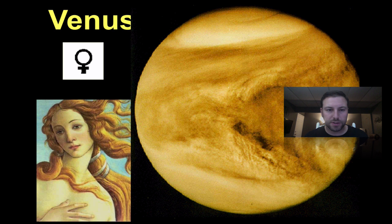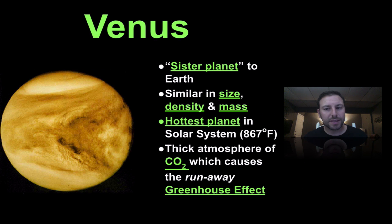Then we move on to Venus. This is the sister planet to Earth, roughly the same size, density and mass of Earth, and it's got a very thick atmosphere of CO2 which causes for an immense greenhouse effect. So it is relatively hot, 867 degrees Fahrenheit, the hottest planet that we have in our solar system, and it's due to that greenhouse effect.